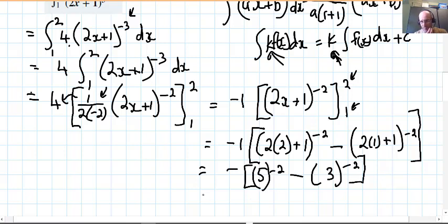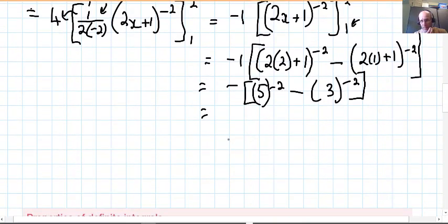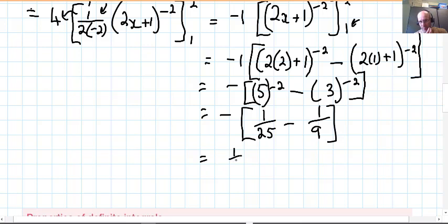I've applied the limits now, and the negative outside. Remember your order of operations now. It's 1 over 5 squared, which is 1 over 25, and 1 over 3 squared, which is 1 over 9.